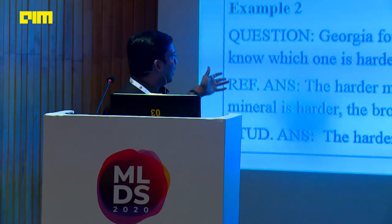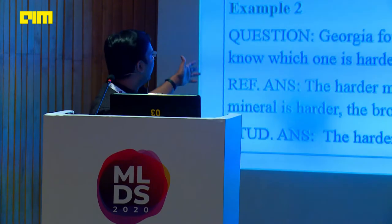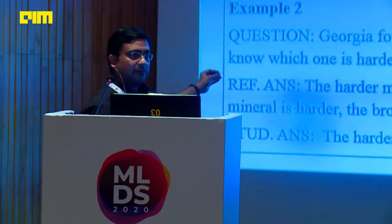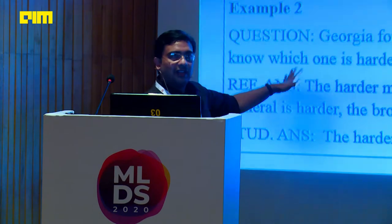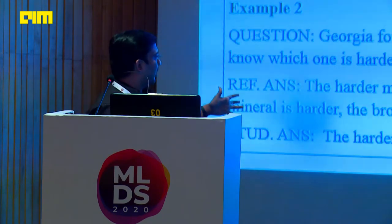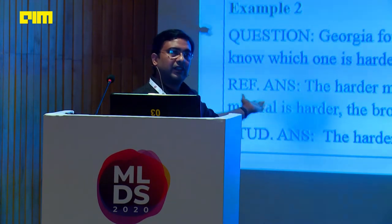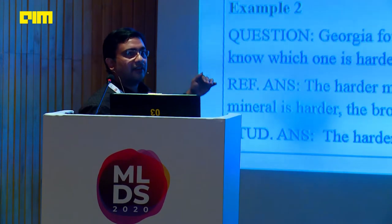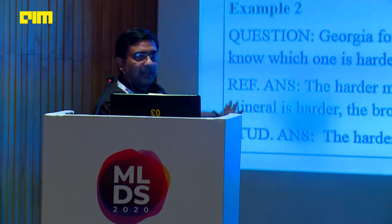The second sample question is 'Georgia found one brown mineral and one black mineral. How will she know which one is harder?' The reference answer is 'The harder mineral will leave a scratch on the less hard mineral.' A student answer saying 'The harder will leave a scratch on the other' is also a right answer. So we have one reference answer and several student answers.